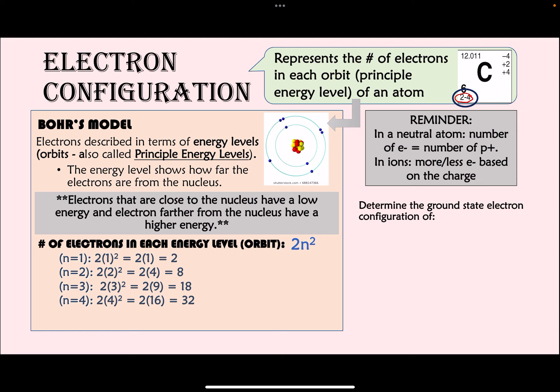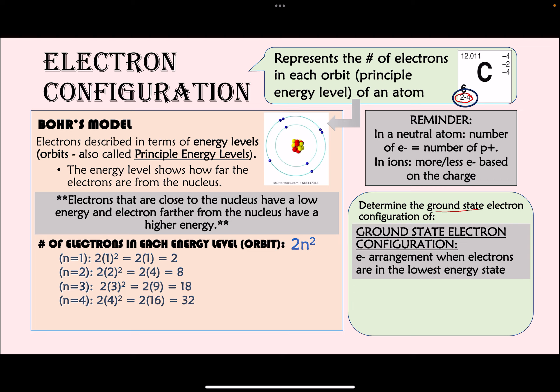Ground state means when the element is in its lowest possible energy state. For the ground state electron configuration, just look it up in the periodic table. Carbon's ground state configuration is 2, 4 — two electrons in the first orbit, four in the second. Magnesium's electron configuration is 2, 8, 2 — two electrons in orbit one, eight in orbit two, two in orbit three — totaling 12 electrons, matching magnesium's atomic number.